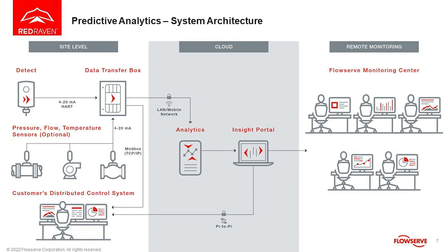The sensor collects and sends data to a data transfer box, similar to the gateway we saw in condition monitoring. From the data transfer box, data is sent through our mobile network or LAN network to the cloud, where analytics happen and our monitoring center tracks everything. You then get that information through our Inside Portal. The key differentiator between condition monitoring and predictive analytics is how data is collected and at what frequency it is transmitted.